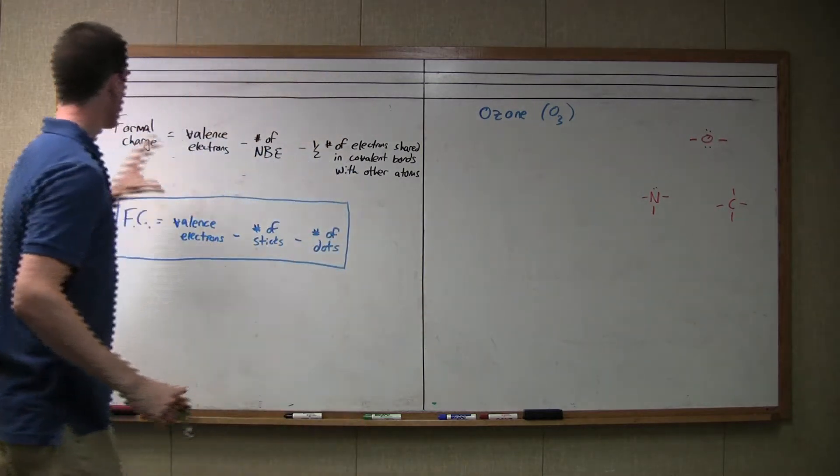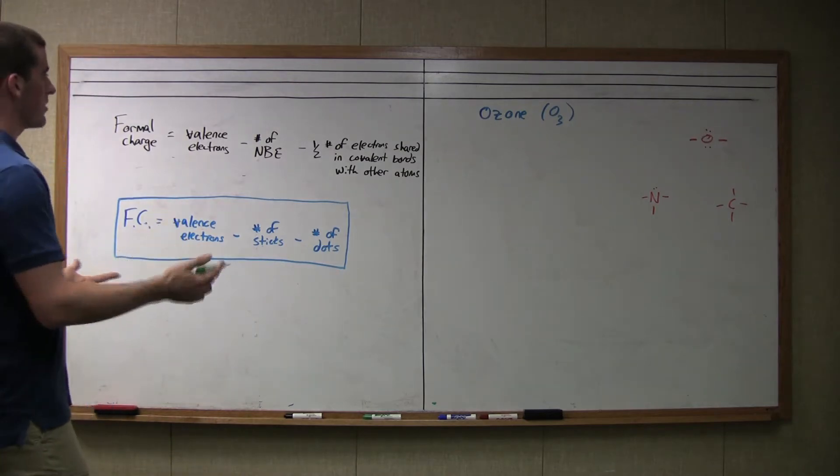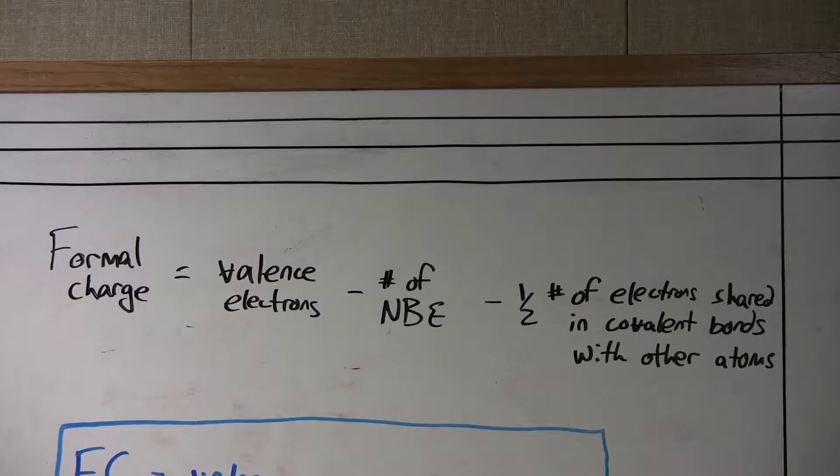So what I have here is a formal charge equation. Formal charge is basically just an equation. The most technical lingo here is: formal charge equals valence electrons minus number of non-bonding electrons (NBE) minus one-half number of electrons shared in covalent bonds with other atoms.